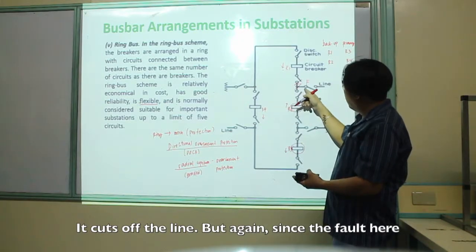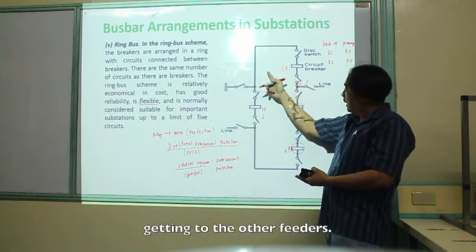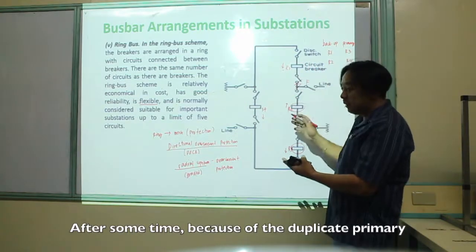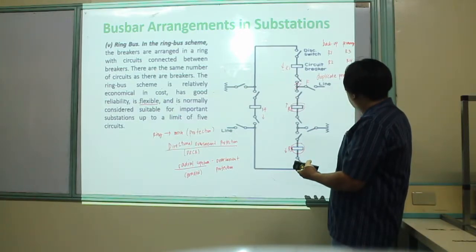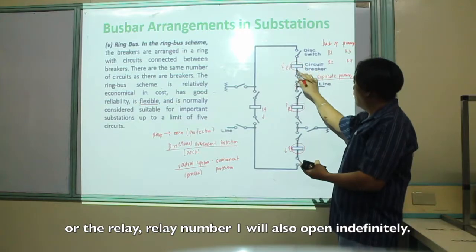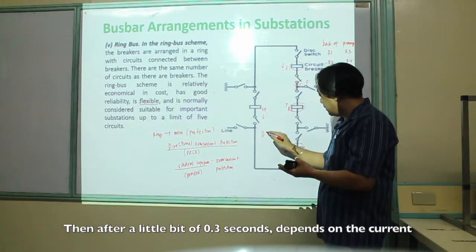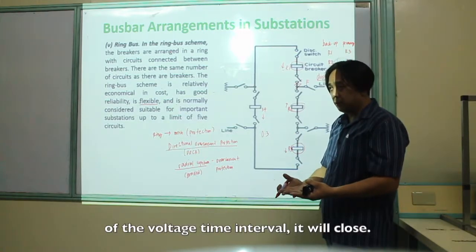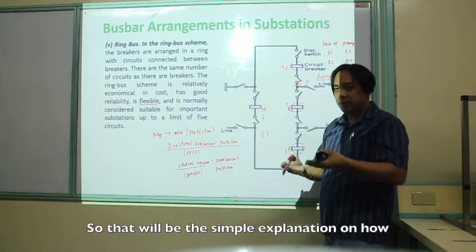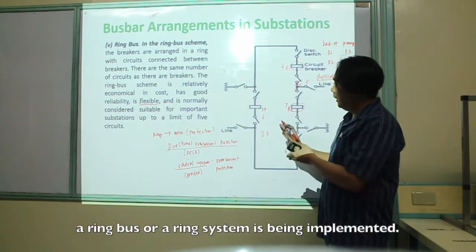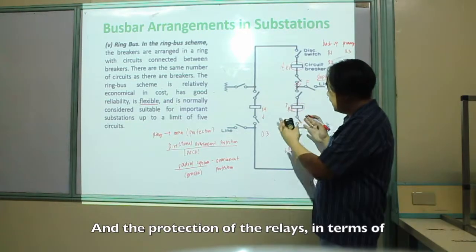Since the fault occurs at that portion, to prevent it from spreading to other feeders, relay number one will also open eventually. After about 0.3 seconds — depending on the coordination time interval — it will close. That is a simple explanation of how a ring bus system is implemented and how the relay protection signals work.